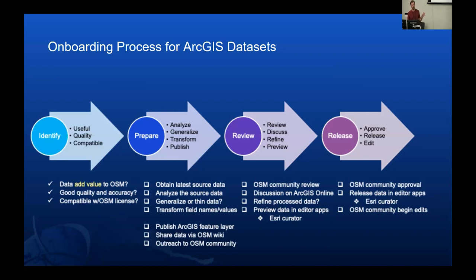The prepare step is really about transforming the schema into OSM tags and values. If the data comes through our Community Maps program, that's a defined schema and we can pretty easily interchange between those. But we get a lot of suggestions from OSM mappers — maybe they say the city of Richmond has open building footprints, we should include them. We go grab that, but it's in a completely different schema. It's not just about changing field names — every city, every county stores address information differently and has different values for building types. So mapping those is really the hard part.